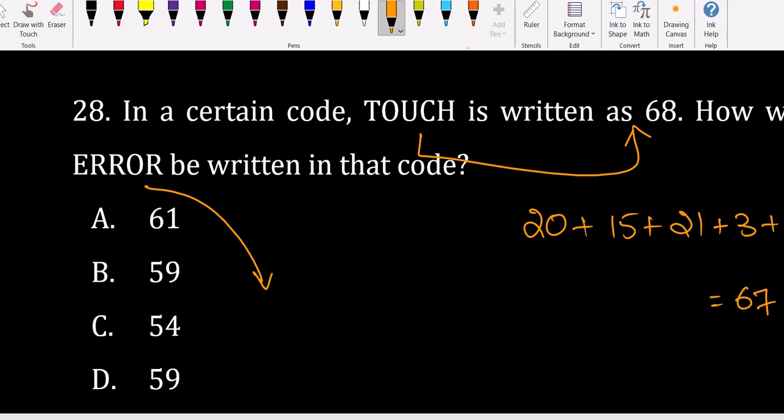For ERROR, E is 5, R is 18 times 3 which is 54, plus O which is 15 gives 69, plus R again is 18 - wait, that gives 55 plus 20 equals 75. But that's not in the options.